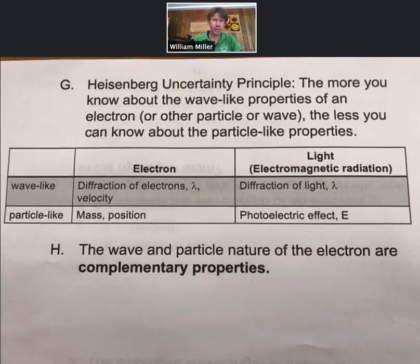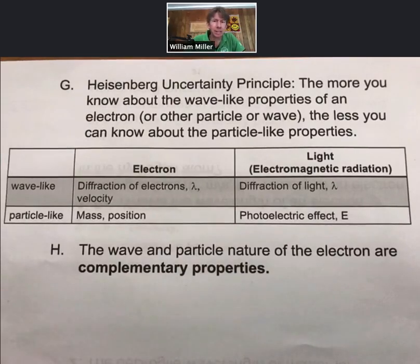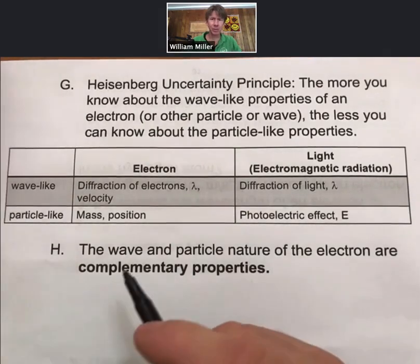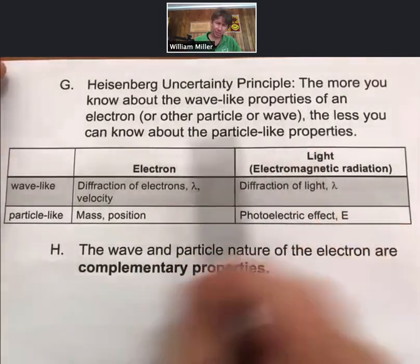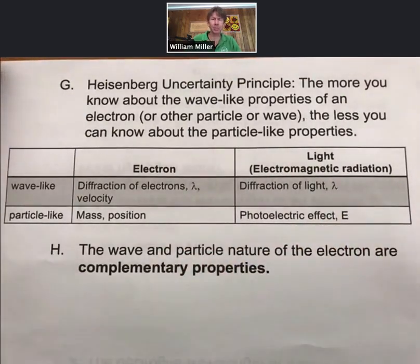Some words about the probable probability and the electron and how we will speak about the electron in terms of probabilities. We can talk about something that comes out of quantum mechanics and the intense equations from quantum mechanics, which we won't cover, but there is a result called the Heisenberg Uncertainty Principle, which states that the more you know about the wave-like properties of an electron or other particle or wave, the less you can know about the particle-like properties.